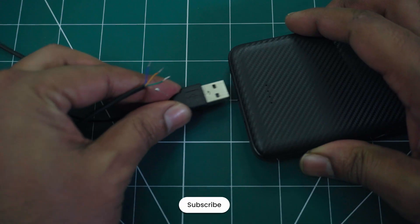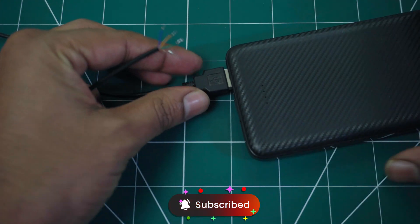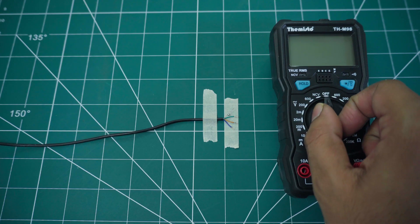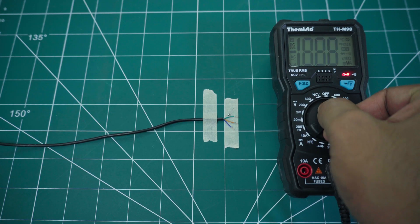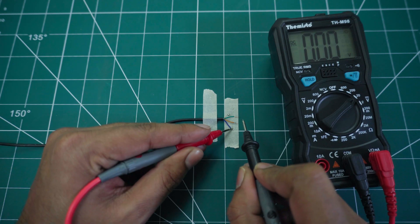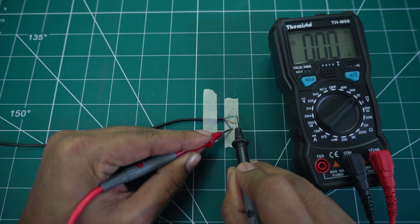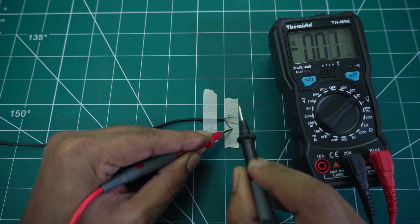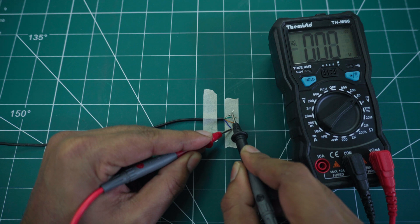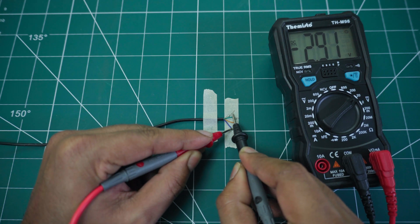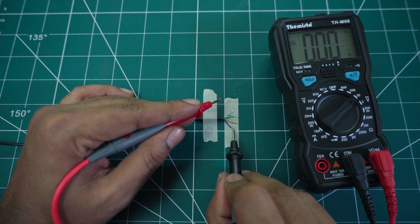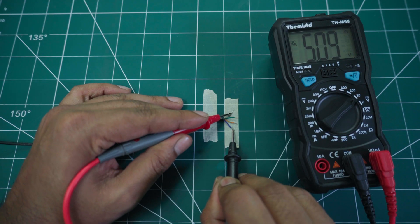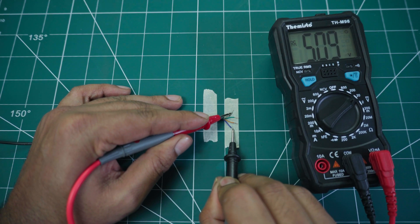Connect the cable to a USB power source to test and determine the polarity. Now, use a multimeter to identify the VCC and ground wires. Once you've identified the VCC and ground pin, remove the cable from the power source.